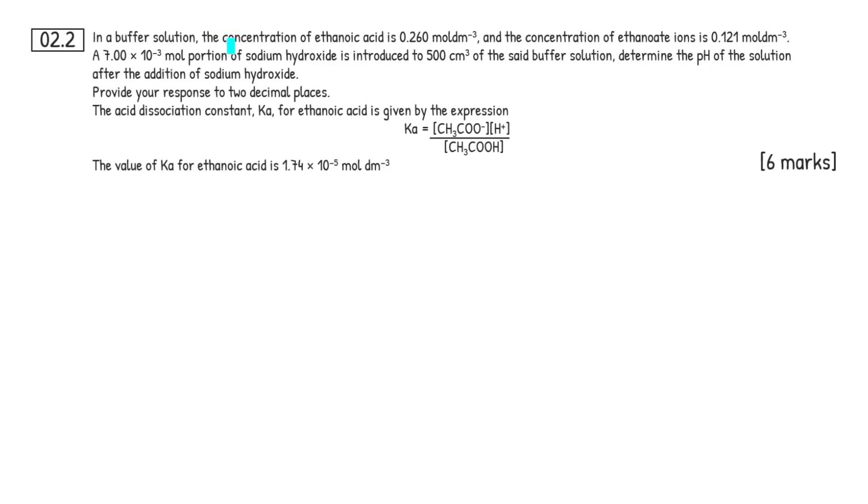So in a buffer solution, the concentration of ethanoic acid is 0.26 mol per decimetre cubed and the concentration of the salts, the ethanoate ions, is 0.121 mol per decimetre cubed. We have a 7 times 10 to the minus 3 mol portion of sodium hydroxide, so a strong base, is introduced to 500 centimetres cubed of the buffer solution. Determine the pH, so that's ultimately what we have to do in the question here, of the solution after the addition of sodium hydroxide.